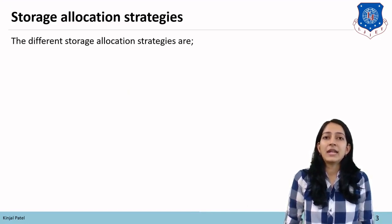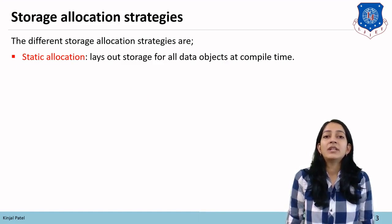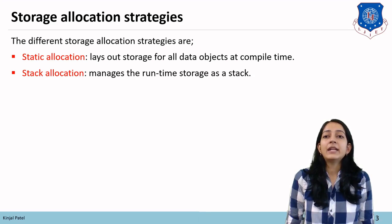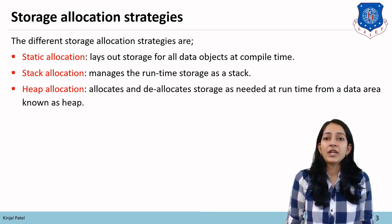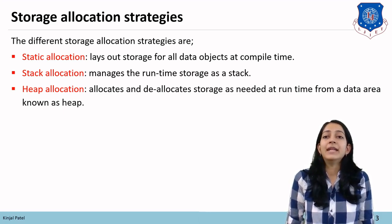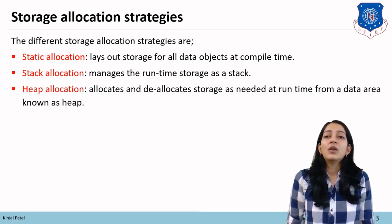The different storage allocation strategies are: static allocation, which lays out the storage for all data objects at compile time; stack allocation, which manages the runtime storage as a stack; and heap allocation, which allocates and deallocates storage as needed at runtime from a data area known as a heap. Stack allocation and heap allocation are runtime memory management techniques.